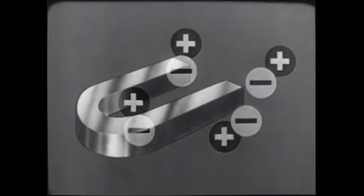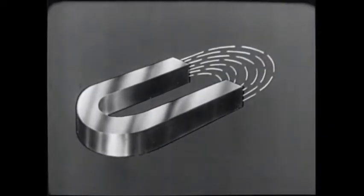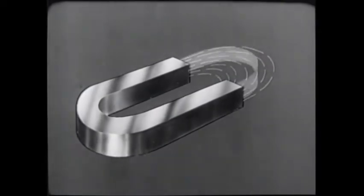One way to provide that outside force is by use of a magnet. It was proved with iron filings that a magnet has magnetic lines of force which connect its poles.